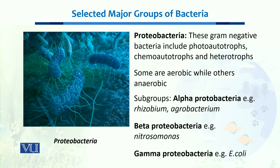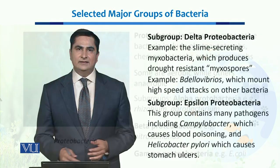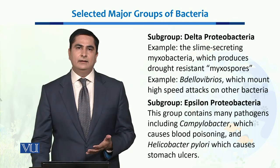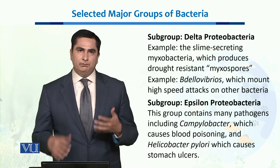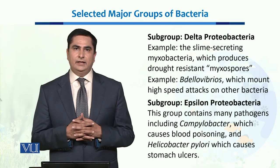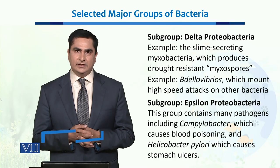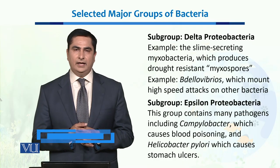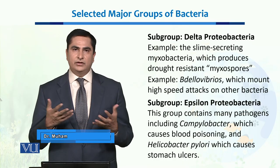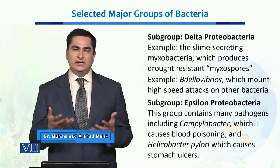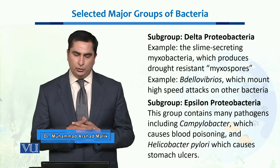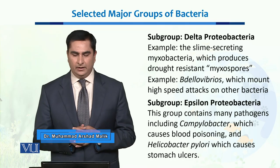When we talk about gamma proteobacteria, it includes E. coli. These are bacteria which live in the large intestine of humans and which synthesize different vitamins for humans as well.